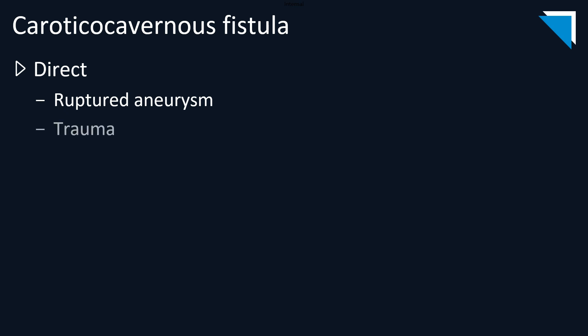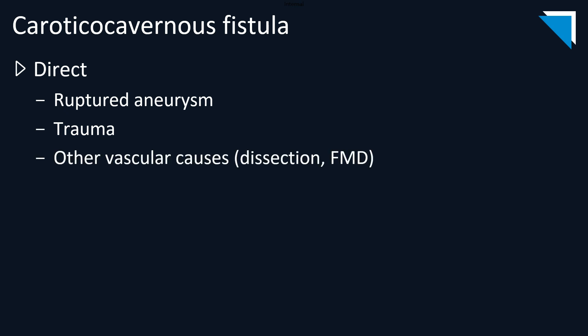A few brief words on the subject. Generally speaking, carotico-cavernous fistulae can be divided into two main categories: direct fistulae and indirect fistulae. Direct fistulae reflect a direct connection between the internal carotid artery and the cavernous sinus. Etiologies for direct fistulae include ruptured aneurysms, trauma, and other vascular causes including dissection and fibromuscular dysplasia.